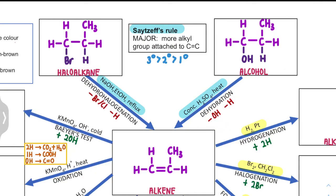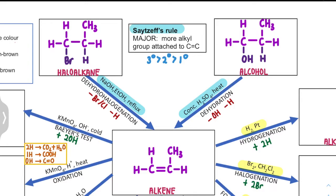So in this case, we remove OH and remove the hydrogen next to it, and we get our propene. Next, the second preparation of Alkene is dehydrohalogenation. Dehydrohalogenation: 'D' means remove, 'hydro' is hydrogen, and 'halogen' depends on the halogen given. If the compound contains Br, we remove Br; if it contains Cl, we remove Cl. The reagent will be sodium hydroxide, ethanol, and reflux.